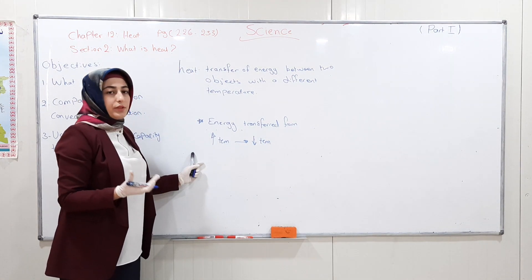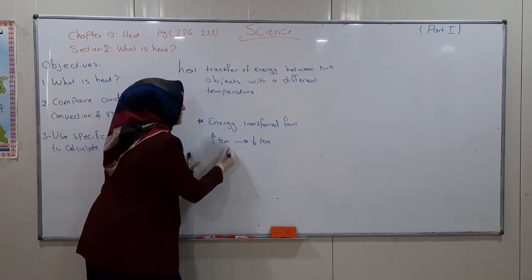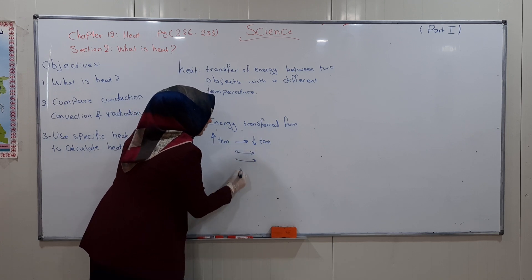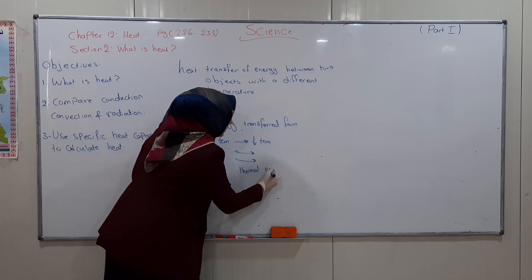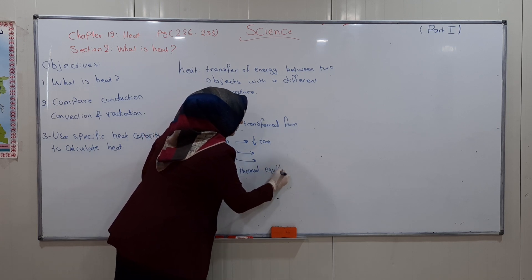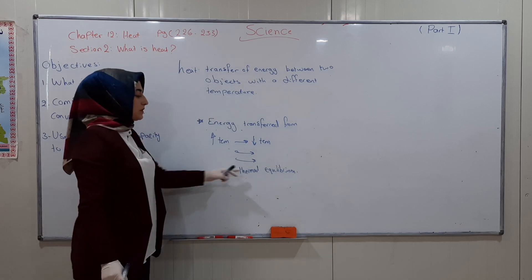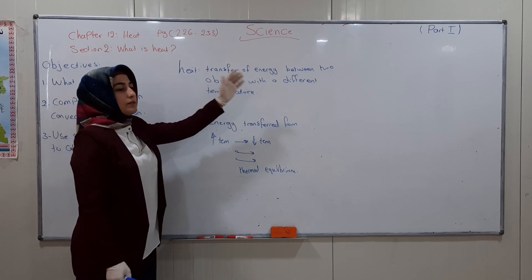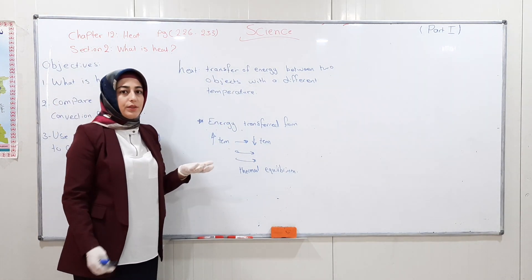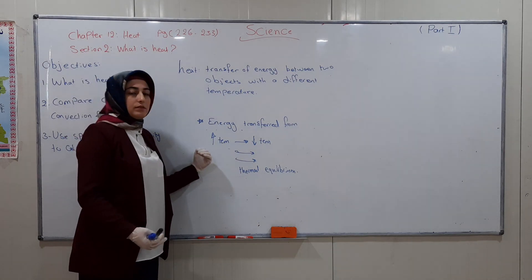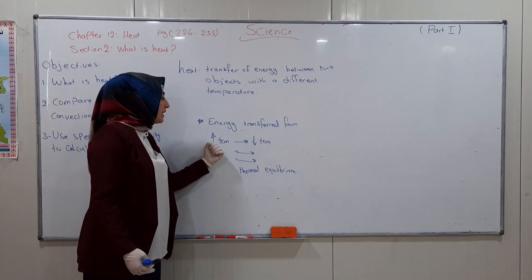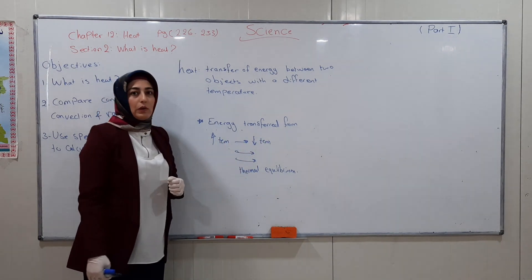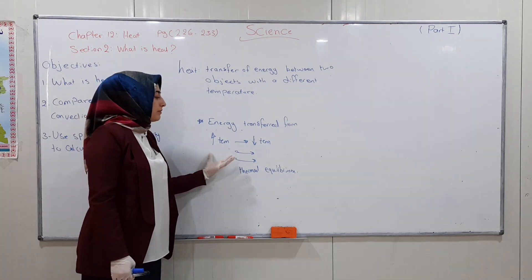So if you have two objects with different temperatures, energy transfers from the higher temperature object to the lower temperature object until thermal equilibrium — meaning until they have the same temperature.